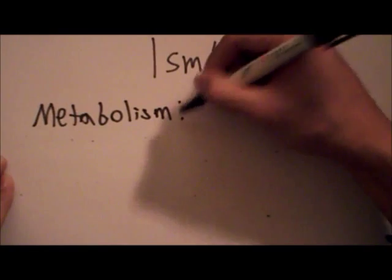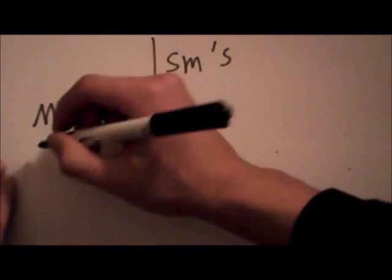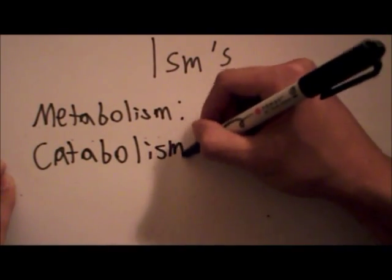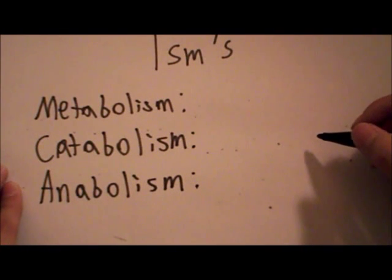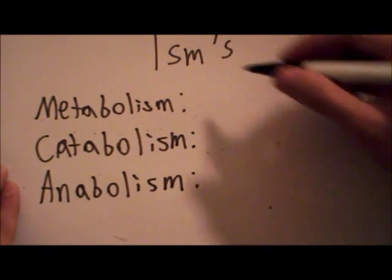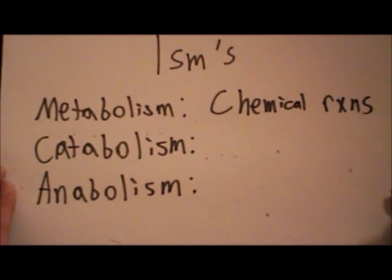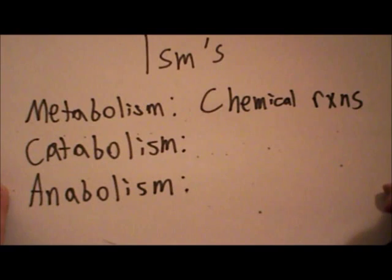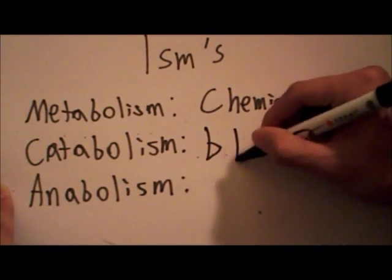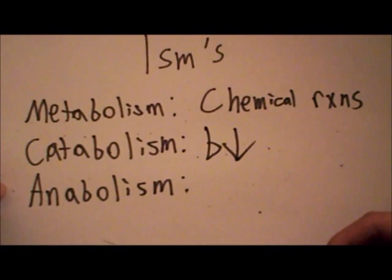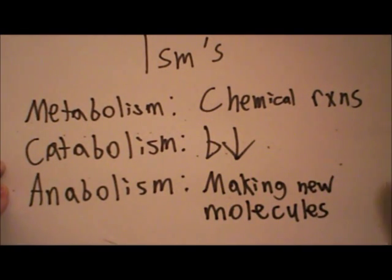There are three isms: Metabolism, Catabolism, and Anabolism. Metabolism is all the chemical reactions. Catabolism is breaking down. And Anabolism is making new molecules.